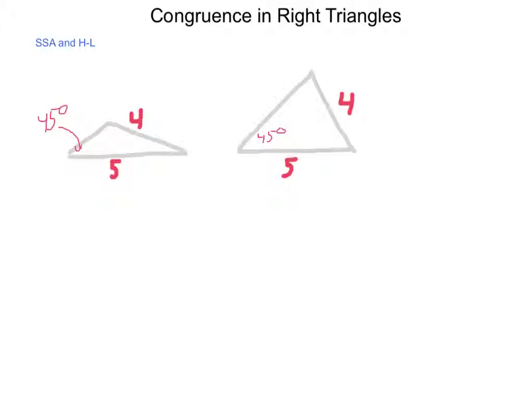We're going to begin by looking at a congruence theorem that people try and push that doesn't work, and that is the side-side-angle congruence. As the name would denote, side-side-angle tells us that we have two consecutive sides and an angle that is not included. In this diagram I have two such triangles.